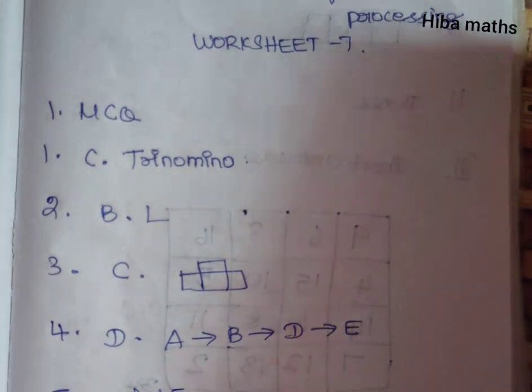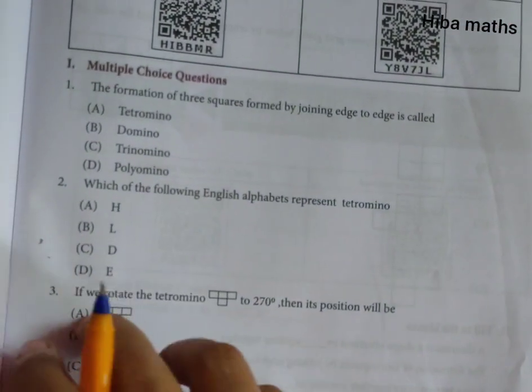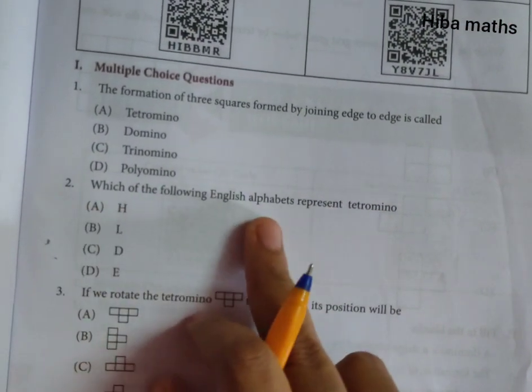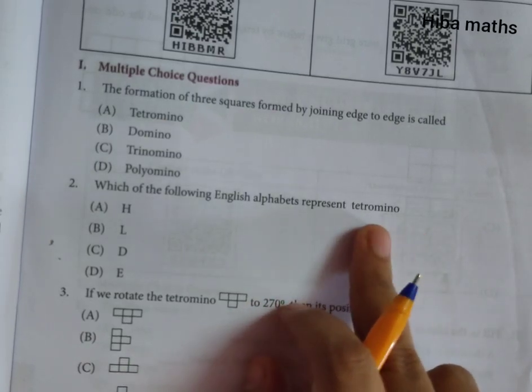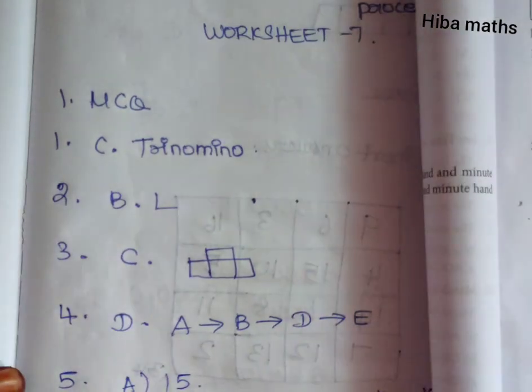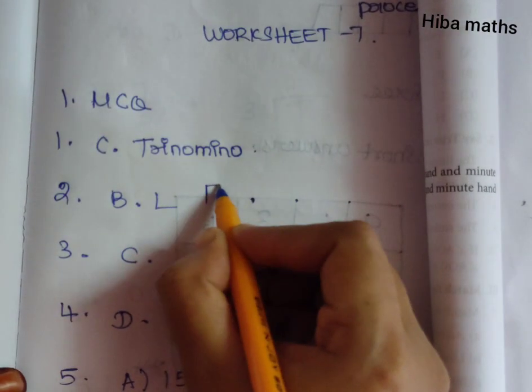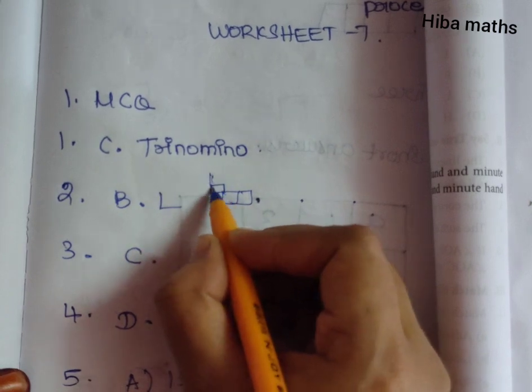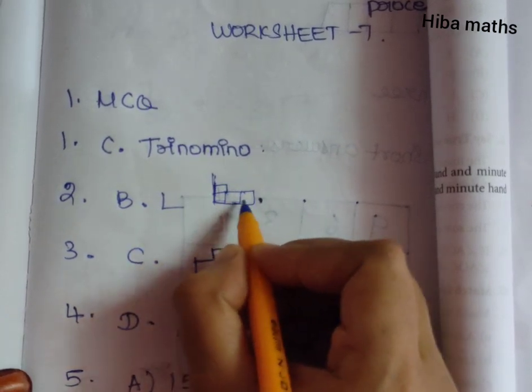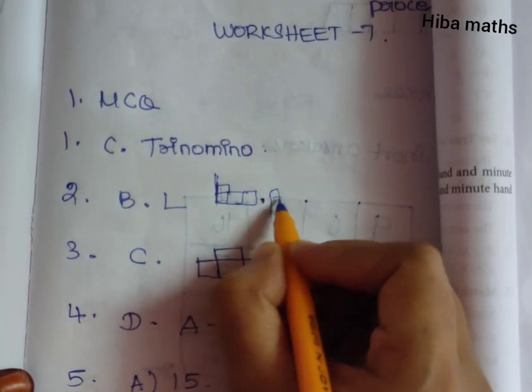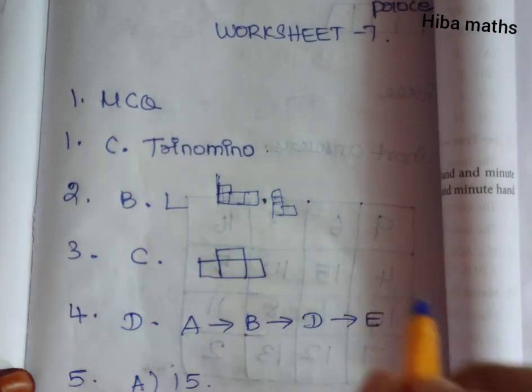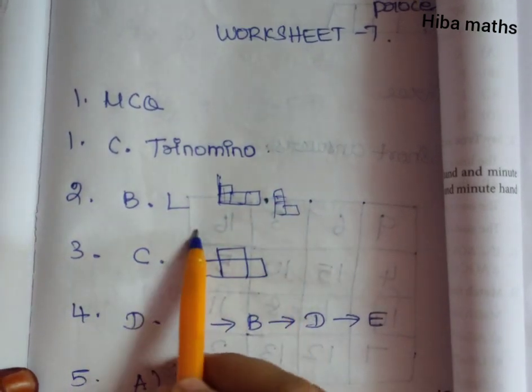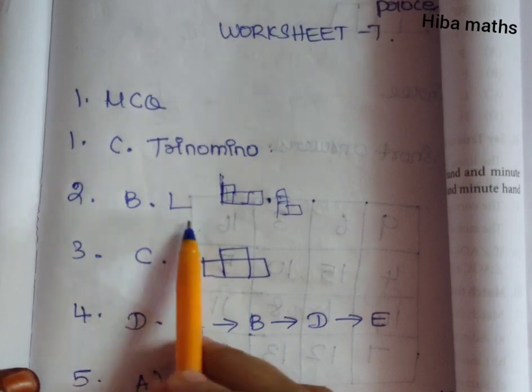Second question, which of the following English alphabet represent tetromino? Tetromino is 4 squares. So 4 is L. That is 1, 2, 3, 4. So this is tetromino, L. Answer is L.